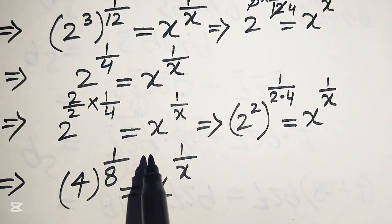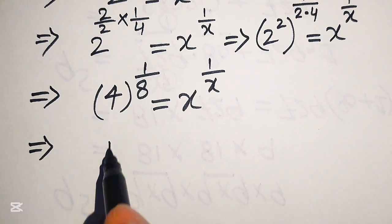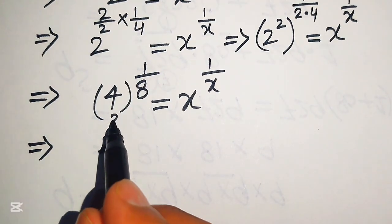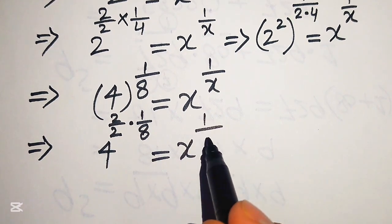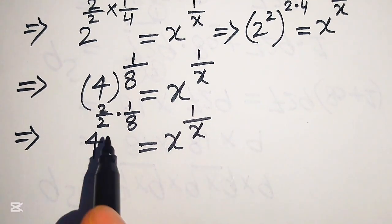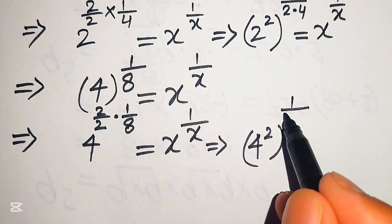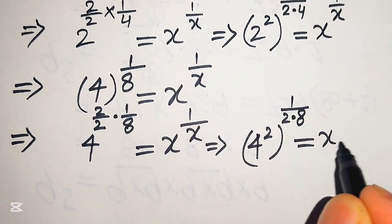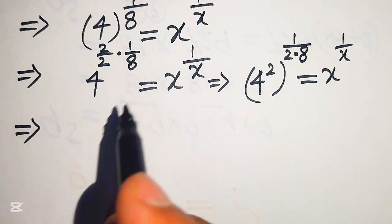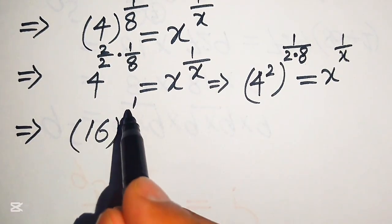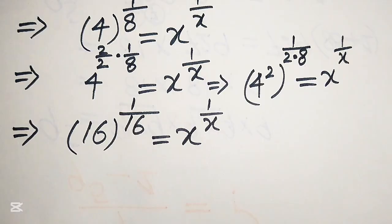We repeat this process again. We multiply the exponent of 4 to the power of 1 over 8 by 2, writing it as 4 to the power of 2 over 2 times 1 over 8. Moving the 2 inside gives 4 squared with whole power 1 over 2 times 8. Now 4 squared equals 16 and 2 times 8 equals 16, so we get 16 to the power of 1 over 16 equals x to the power of 1 over x.